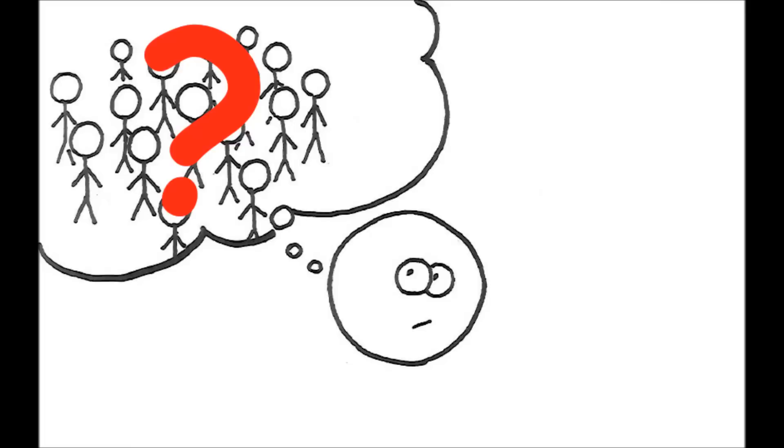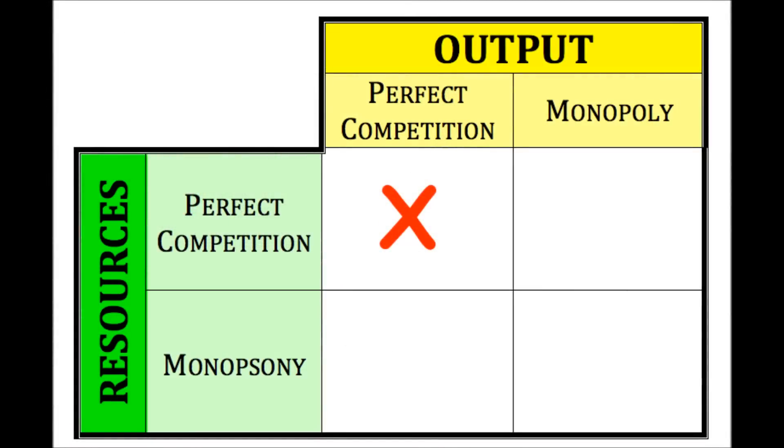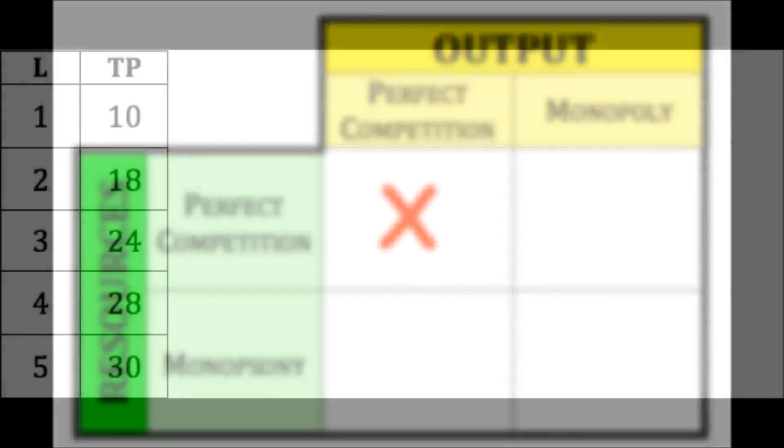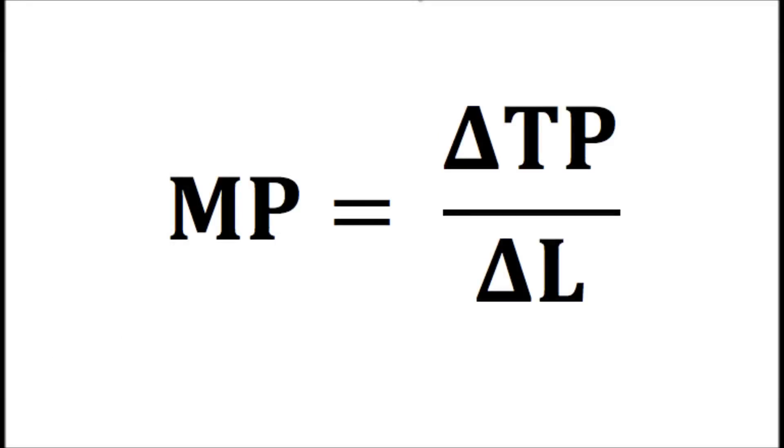Before I get into that, let me do a quick recap of the firm that is perfectly competitive in both input and output, so that we can make some comparisons later. If you remember, we started out with just the workers and the output. From there, because we know that marginal product is the change in output when the resource, labor in this case, changes, we can look at the change in output in the table each time we hire another worker.